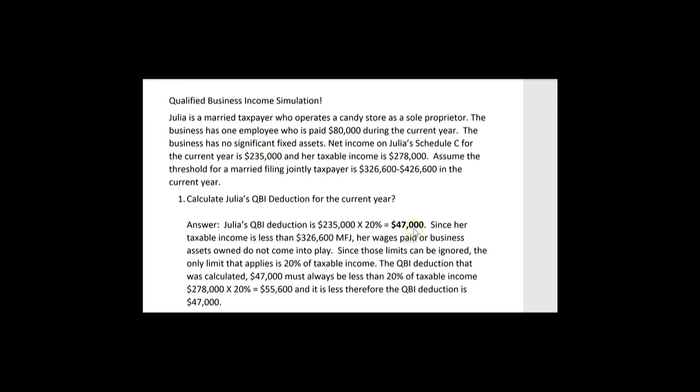We're going to give her $47,000 as a QBI deduction. Because her taxable income was less than $326,600, we don't really care what the wages are — those $80,000 of wages didn't mean a thing.